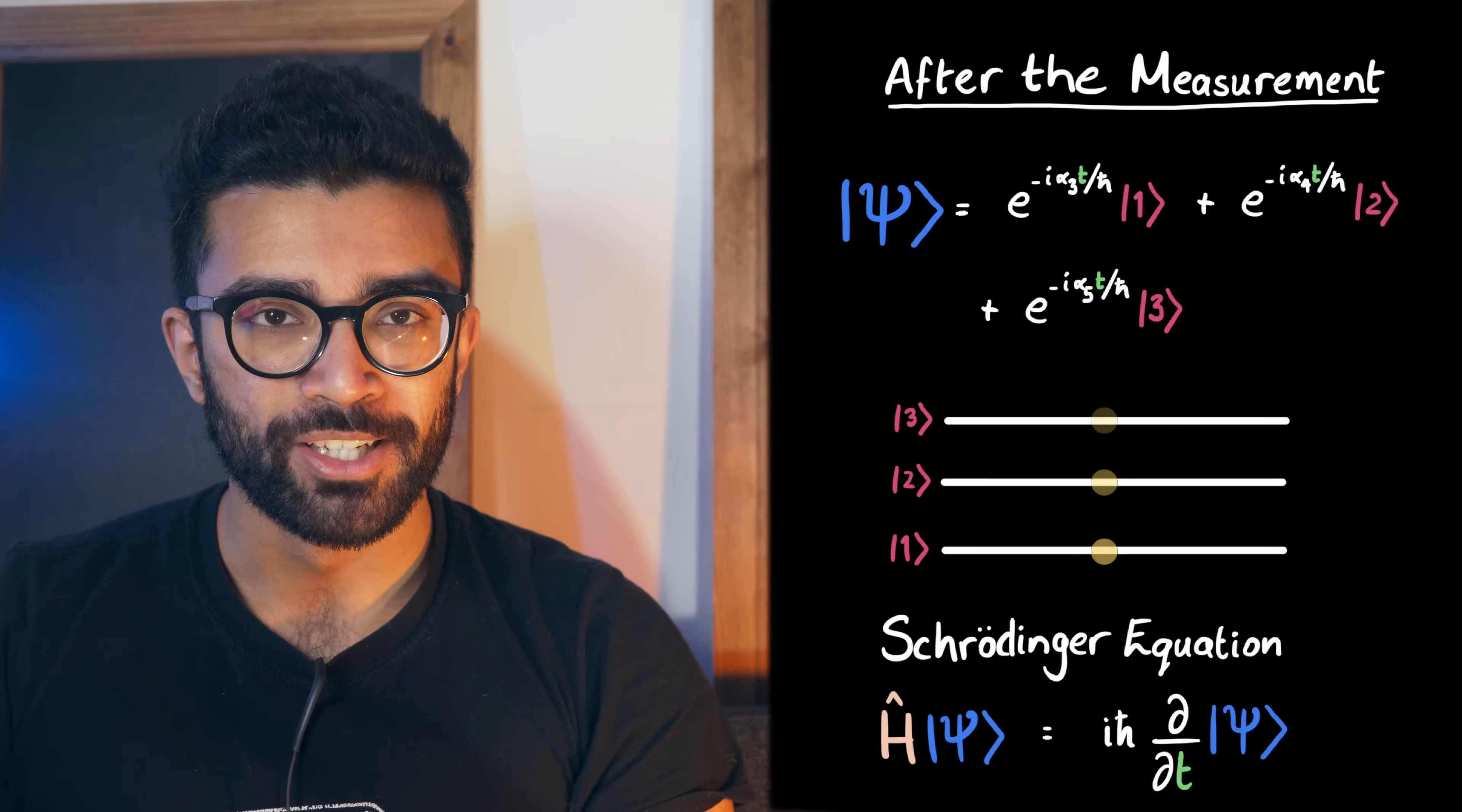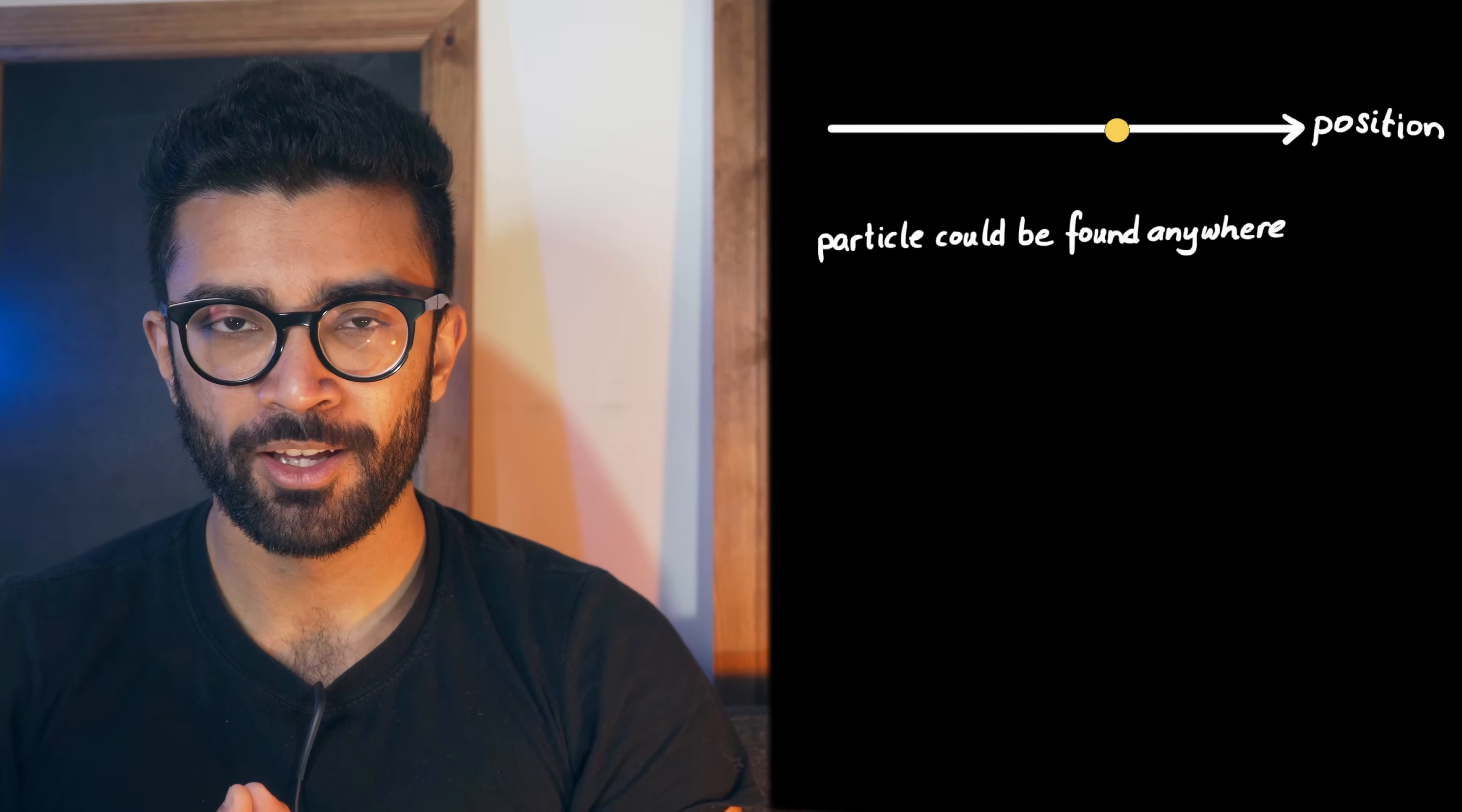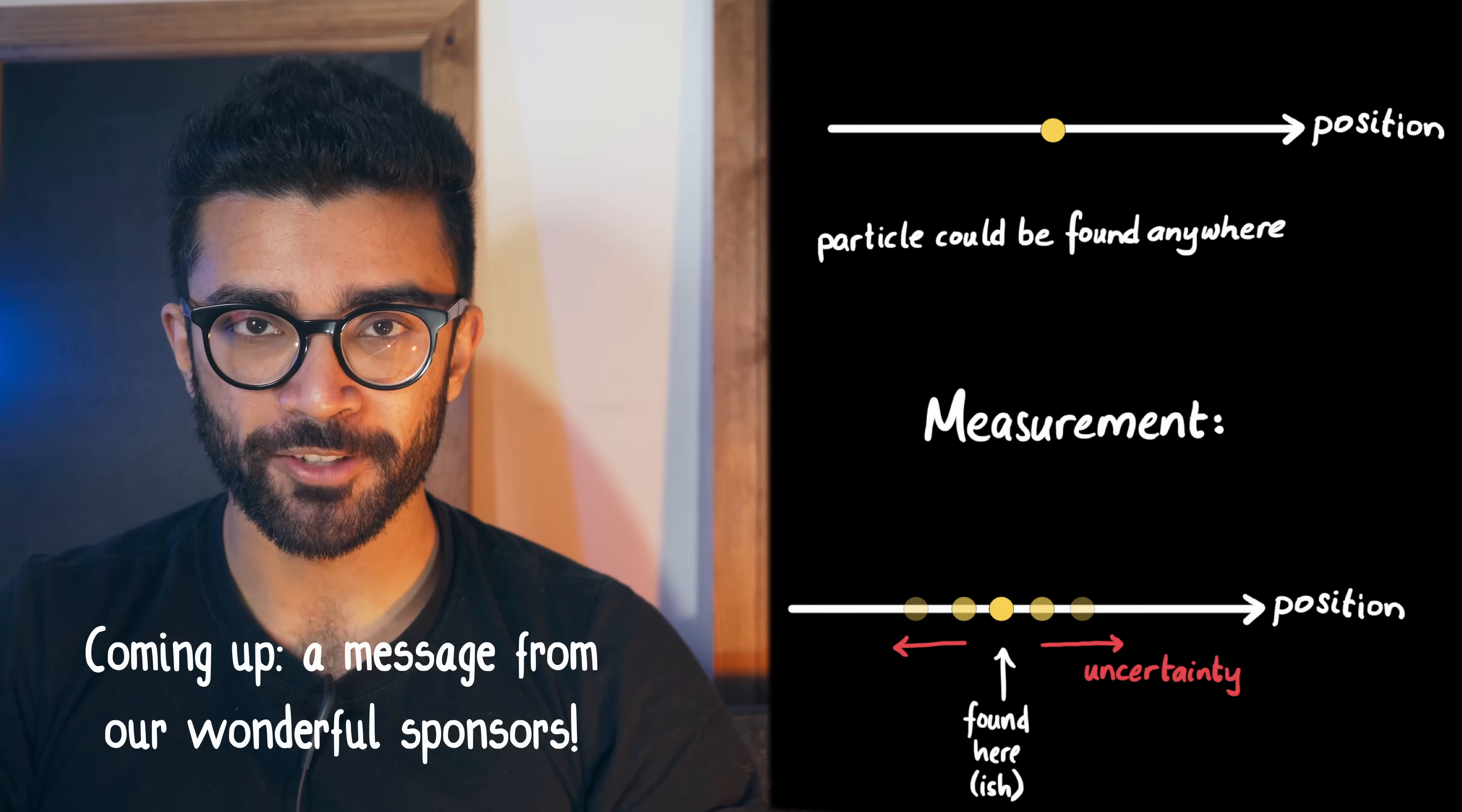Now, it's worth mentioning that this is all a basic description of wave function collapse, based on a system where the possible measurement results are distinct states. When dealing with other systems that have a much more continuous set of measurement results, like the position of a particle, which could potentially be anywhere in a given region of space, rather than in specific fixed locations, then the collapse occurs into a few close-by states, reflecting Heisenberg's uncertainty principle. That's a discussion for another video, however.